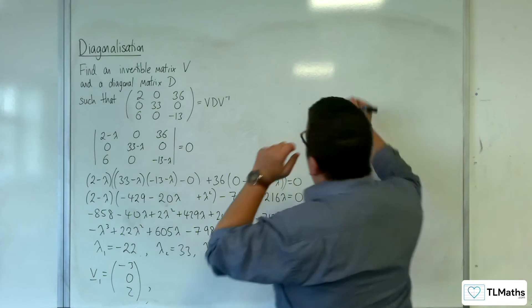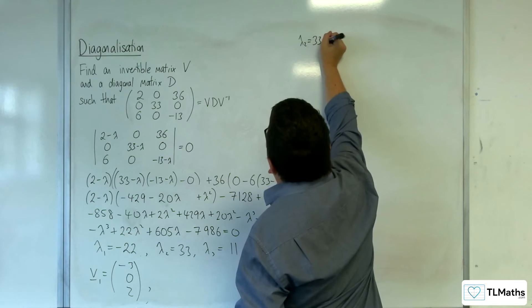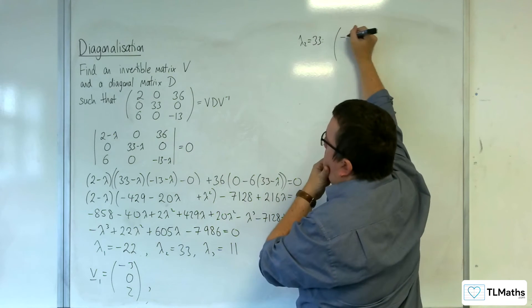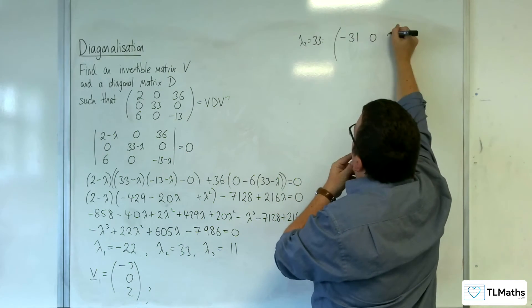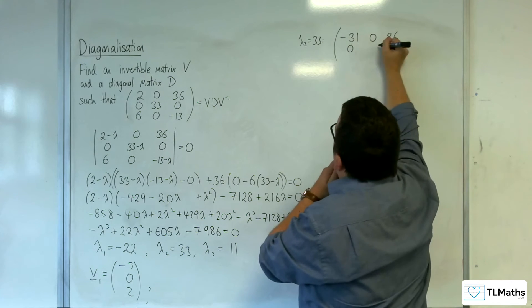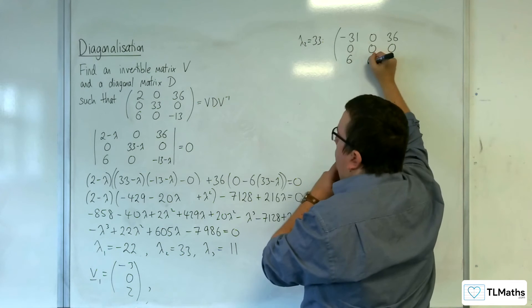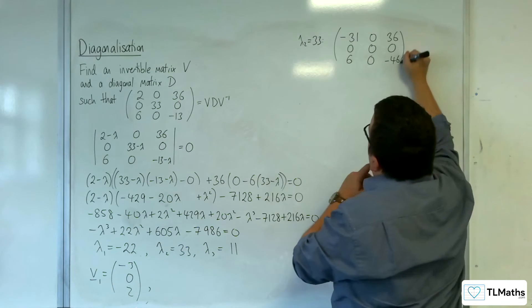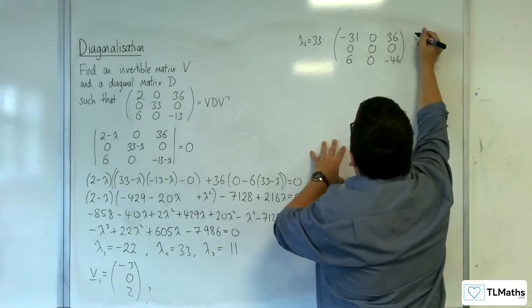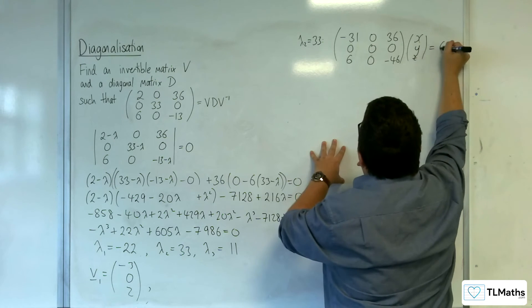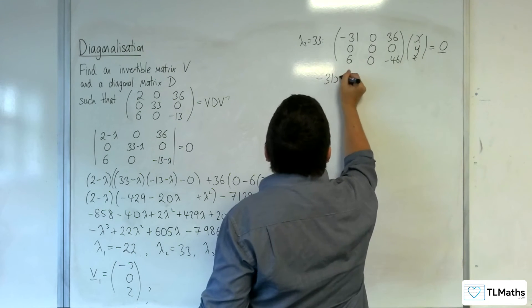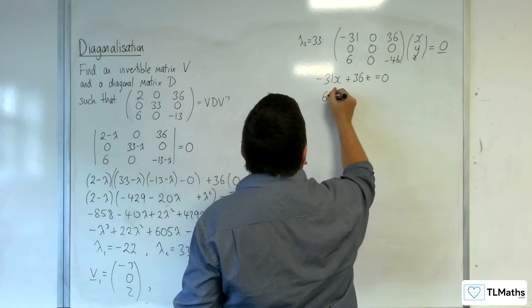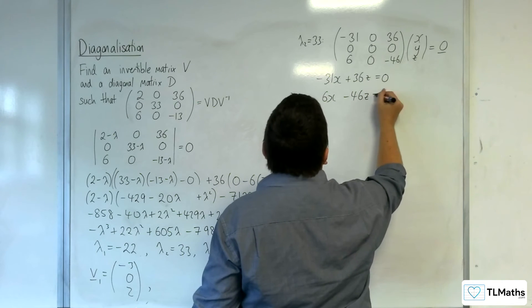So lambda 2 is 33. Our matrix, 2 take away 33, gets us down to minus 31. Then 0, 36, 0, 0, 0, 6, 0, minus 13 take away 33, is minus 46. Times x, y, z is 0, so we've got minus 31x plus 36z is 0, and we've got nothing from the middle row. Then we've got 6x take away 46z is 0.